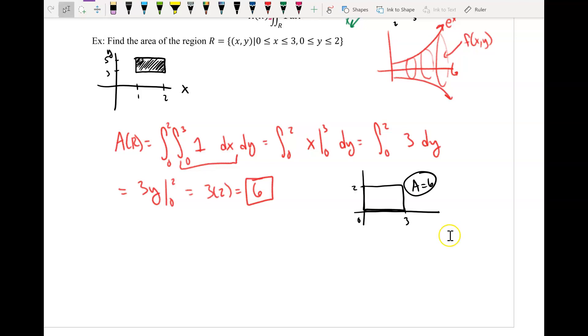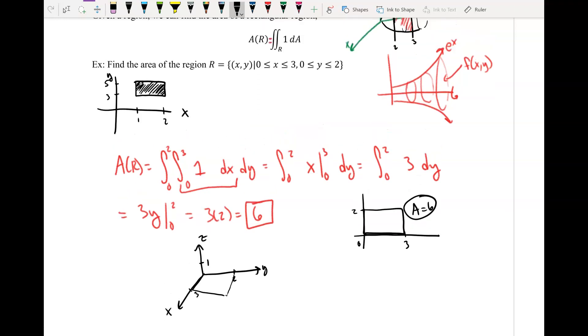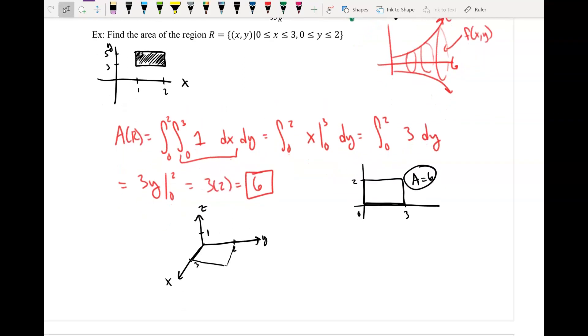Now, why does the double integral work? Well, think about it this way. Imagine that you now have a height. So let's say you have x, y, and z. So x is from 0 to 3, y is from 0 to 2, kind of like how we were doing it. But imagine now that we have a height of 1. And that's basically where this 1 is coming from. So this 1 is just, imagine that you have a plane. So imagine that that's just the equation of the plane right at 1.